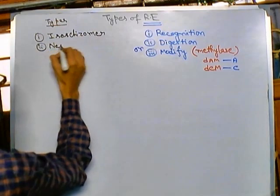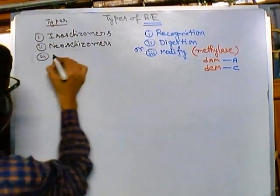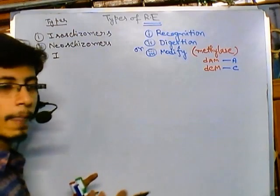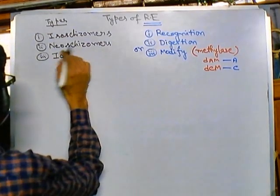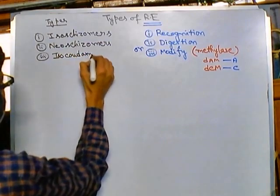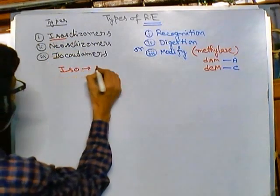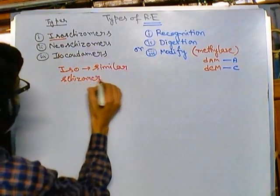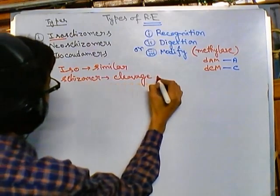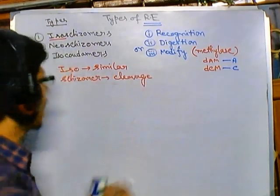I have already discussed this but I need to make the explanation clearer. Look at this terminology — 'iso' means similar, and 'scizomer' means cleavage of the DNA. So similar type of cleavage will be called isoscizomer.